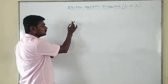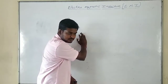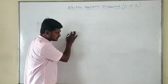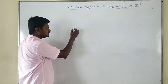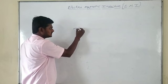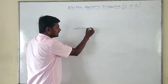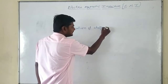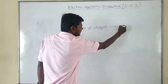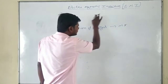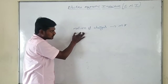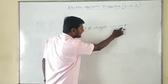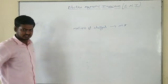Now coming to the fourth chapter, moving charges and magnetism. In that chapter we discussed that when charges are in motion, motion of charges produces the magnetic field. So when a charge is in motion it produces not only current, it also produces a magnetic field. Essentially we are producing a magnetic field from moving charges.